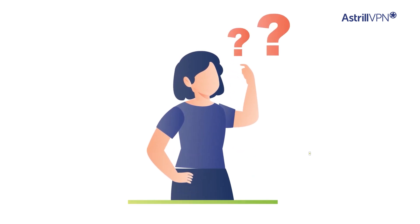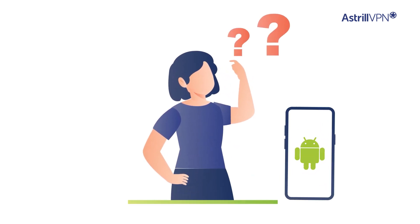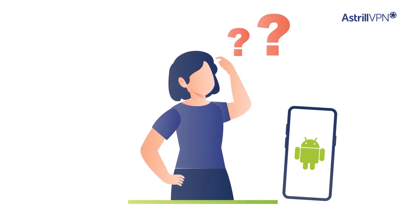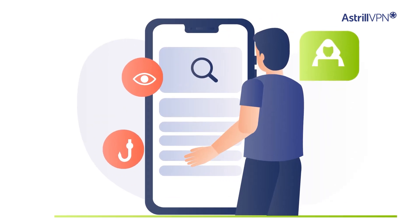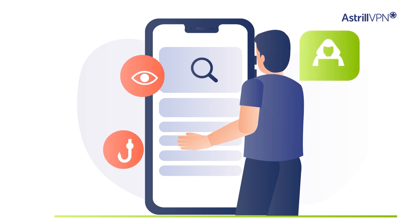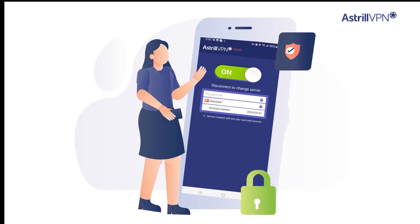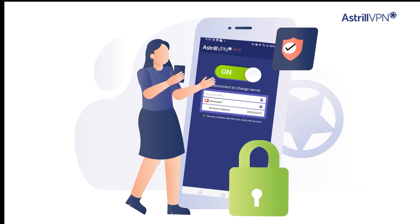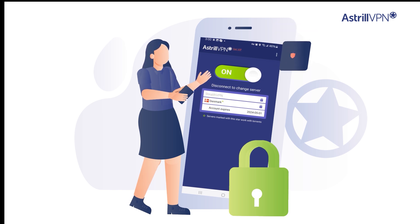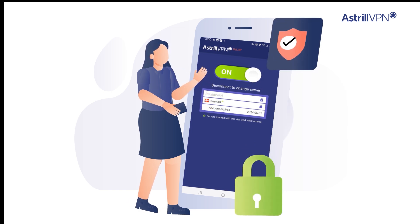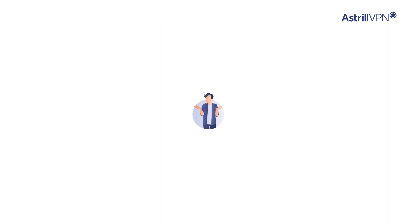Think your Android device is safe from prying eyes? Think again. While browsing on Android seems harmless, your data is constantly at risk from hackers and surveillance. Enter Astril VPN, your digital fortress against cyber threats. With military-grade encryption, your data is locked up tight, ensuring privacy.